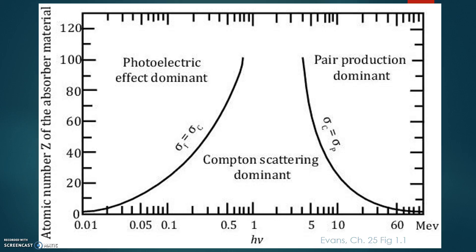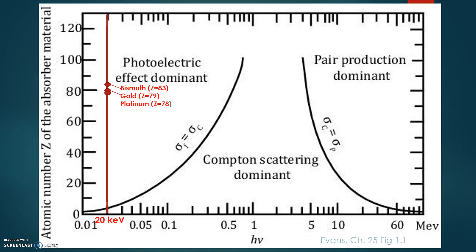This graph represents which process is dominant given the Z number of the absorbing material and the energy of the interacting photons. Here I will demonstrate graphically the dominance of the photoelectric effect over Compton scatter. 20 keV photons were used in these simulations, indicated by a red line, and as we can see most of the line lies in the photoelectric dominant region. To further capitalize on this dominance, we want to select nanoparticles composed of high-Z elements, as the probability of the photoelectric effect is highly dependent on the Z number of the absorber. The most common high-Z materials used in nanoparticle dose enhancement research are platinum, gold, and bismuth, which puts us well within the photoelectric dominant zone.